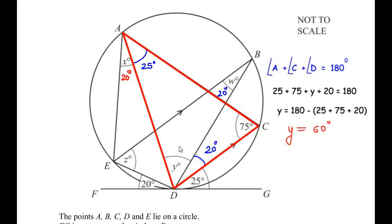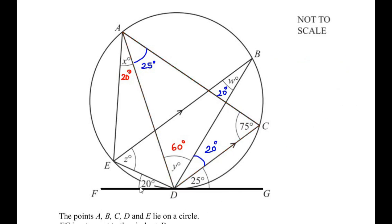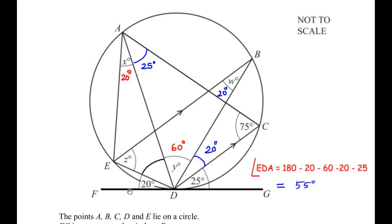Now the only angle remaining is angle Z. Let us consider the straight line FDG. For this straight line, we have the angles 20, 60, 20 and 25 degrees. The only missing angle is angle EDA. To find it, we add all the remaining angles and subtract from 180 degrees, since FDG is a straight line. So angle EDA equals 180 minus 20 minus 60 minus 20 minus 25, which gives angle EDA as 55 degrees.